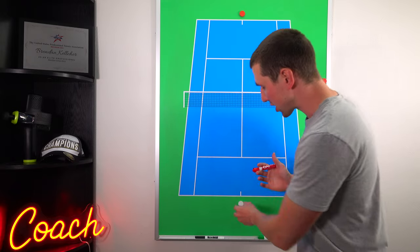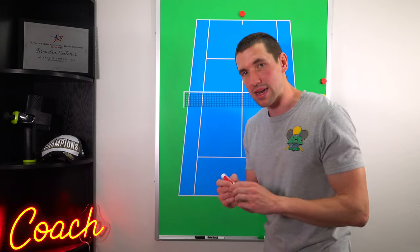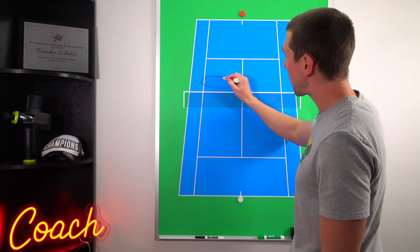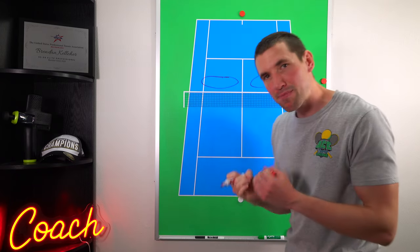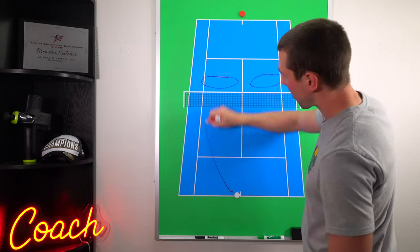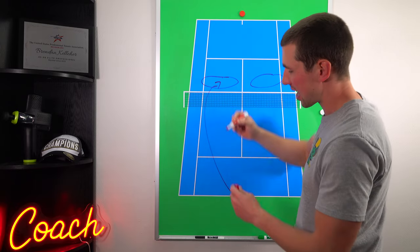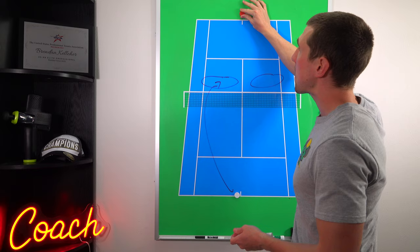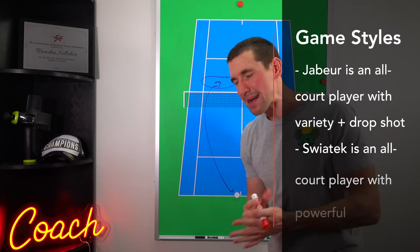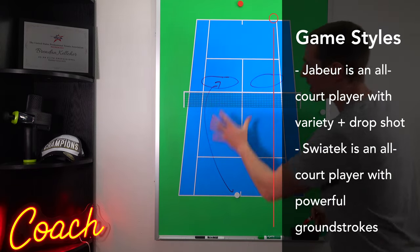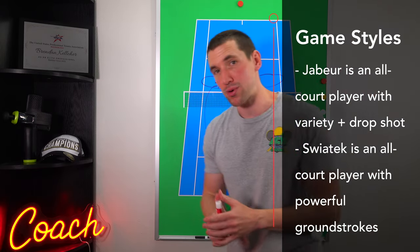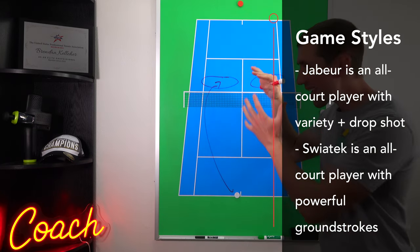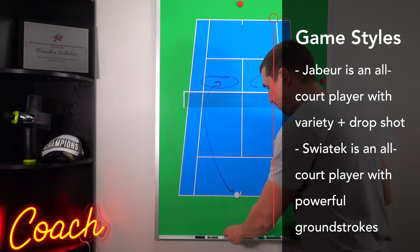As an all-court player, she has the ability to use a lot of different shots. One of her favorites that she's really known for is that drop shot, especially on that backhand side. So she has big groundstrokes to push her opponent back, and then catch them off guard with that drop shot. So her plan is using variety, push her opponent back, and then use the drop shot.